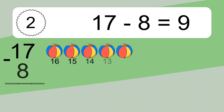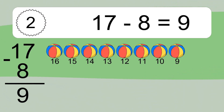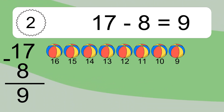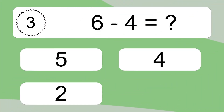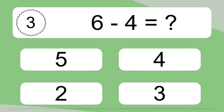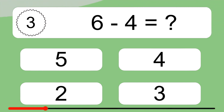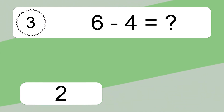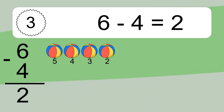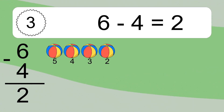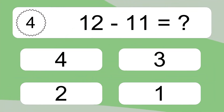17 minus 8 equals what? 17 minus 8 equals 9. Let's count it: 16, 15, 14, 13, 12, 11, 10, 9. 6 minus 4 equals what? 6 minus 4 equals 2. Let's count it: 5, 4, 3, 2.